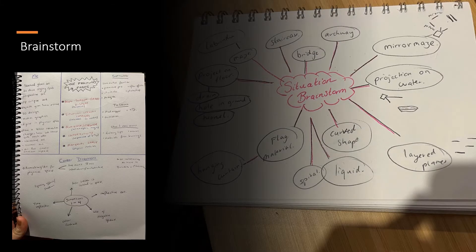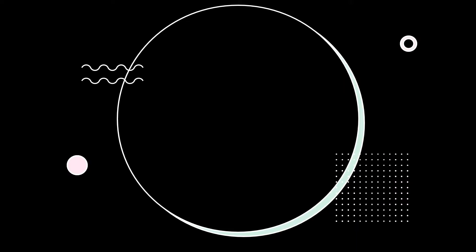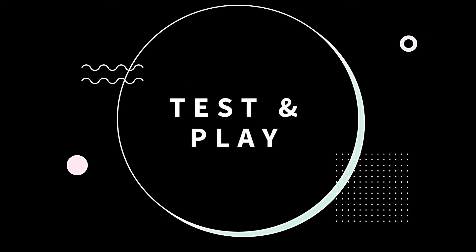For Situations 5 and 6, I started a process of brainstorming, working on key words, and initially got a bit stuck. So I decided to do a process of test and play, just to see how light and how images would work, since my resources and accessibility to projectors was limited.